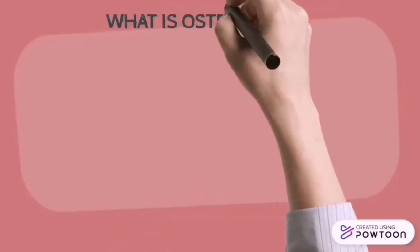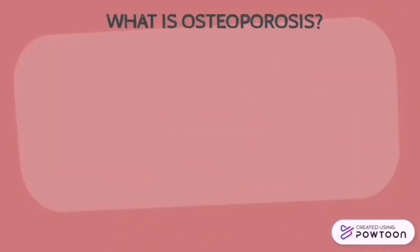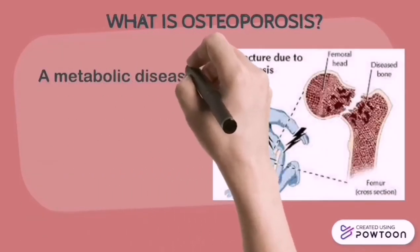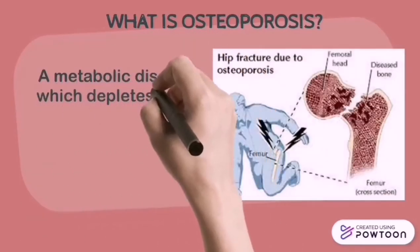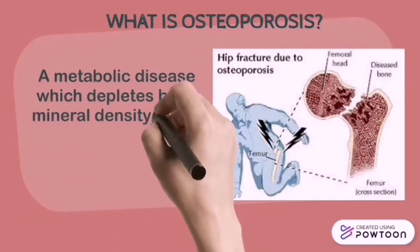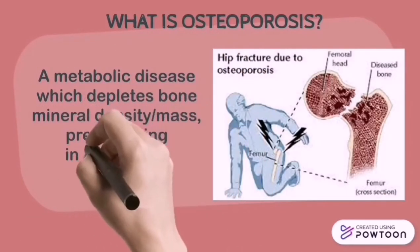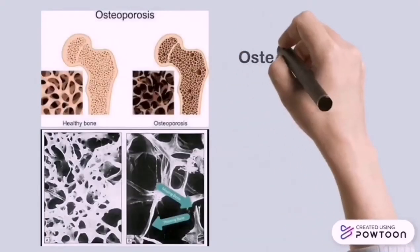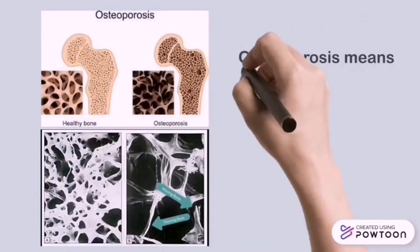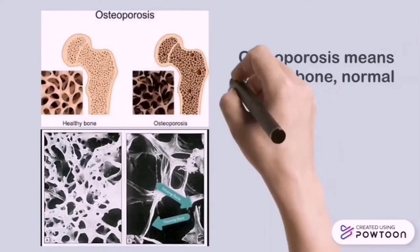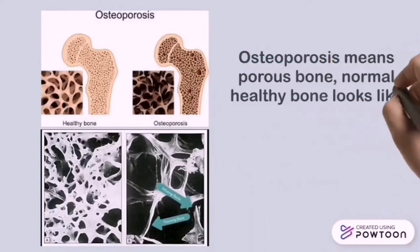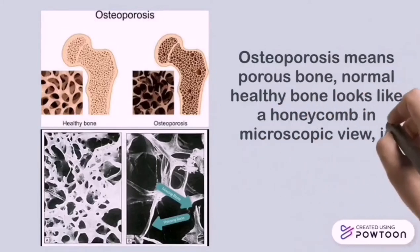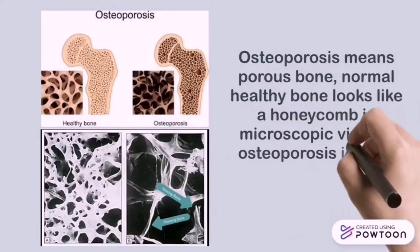What is osteoporosis? Osteoporosis is a metabolic disease which reduces bone mineral density or mass, predisposing individuals to fracture. Osteoporosis means porous bone. Normal healthy bone looks like a honeycomb in microscopic view. In osteoporosis, it looks porous.